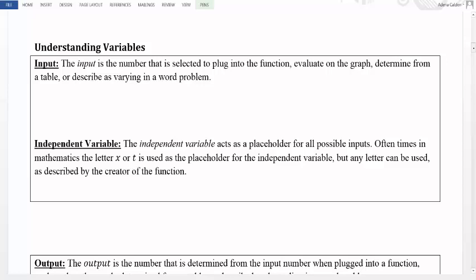The place where we plug it in is called the independent variable. The independent variable acts as a placeholder for all possible inputs. Oftentimes in mathematics, we use the letters x or t as the placeholder for the independent variable, but any letter could be used as described by the creator of the function. If we're writing a problem about quantity, we might use the letter Q as our placeholder. Or if we're talking about dogs, we might use D. It doesn't matter the letter we choose, as long as we're clear about where it is in our problem.